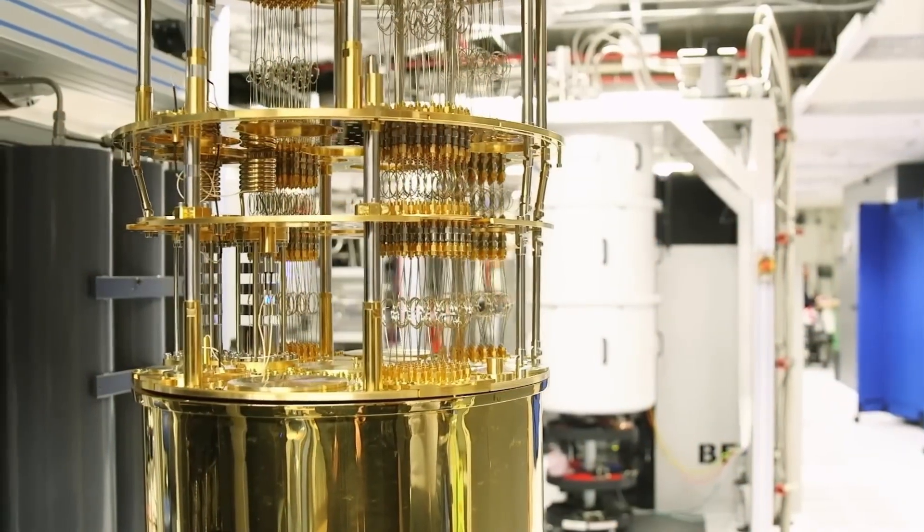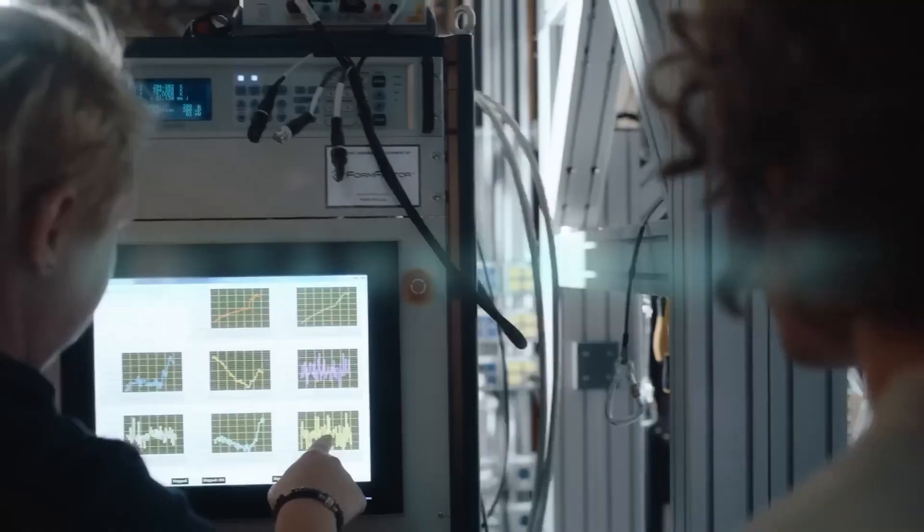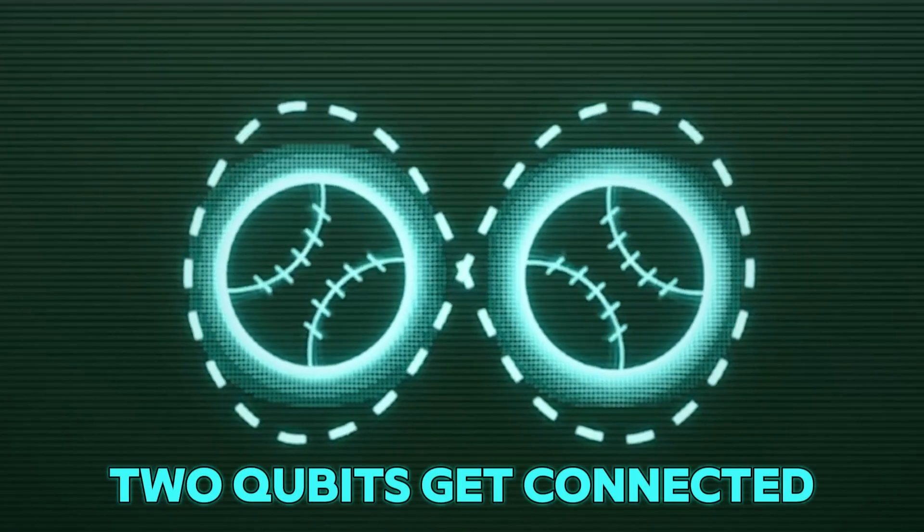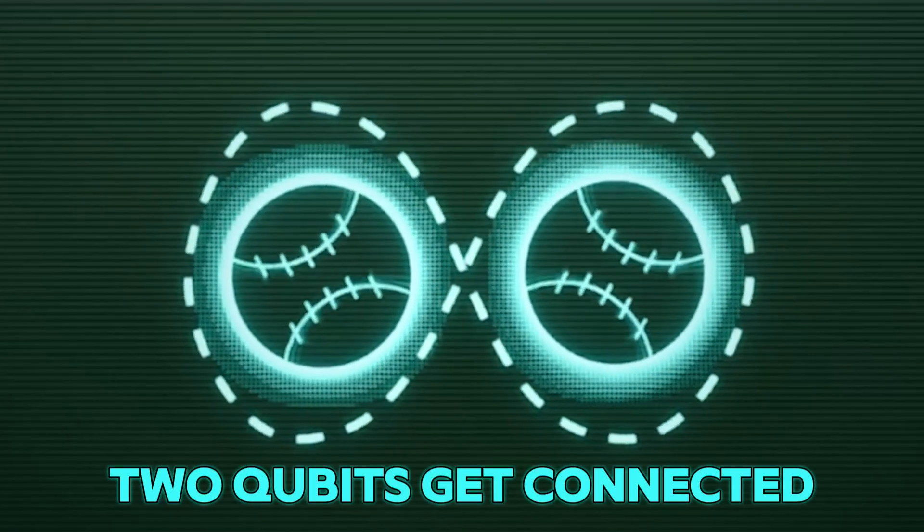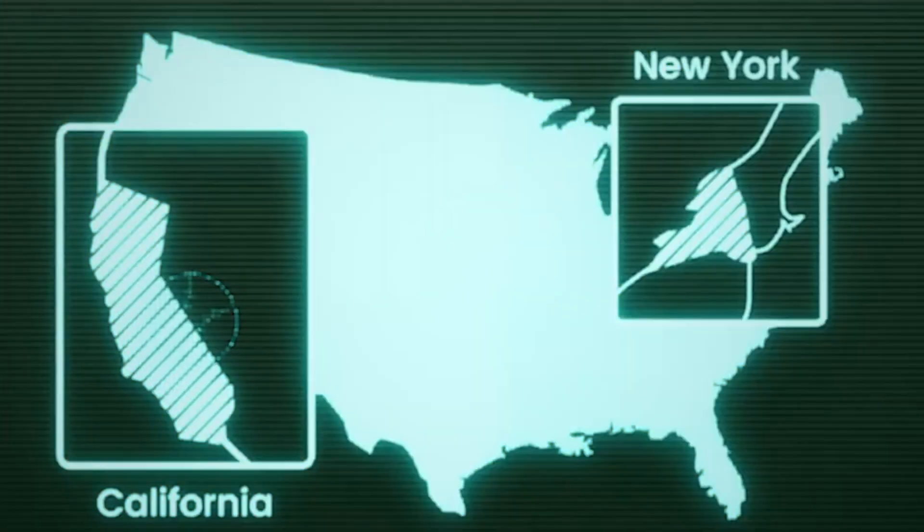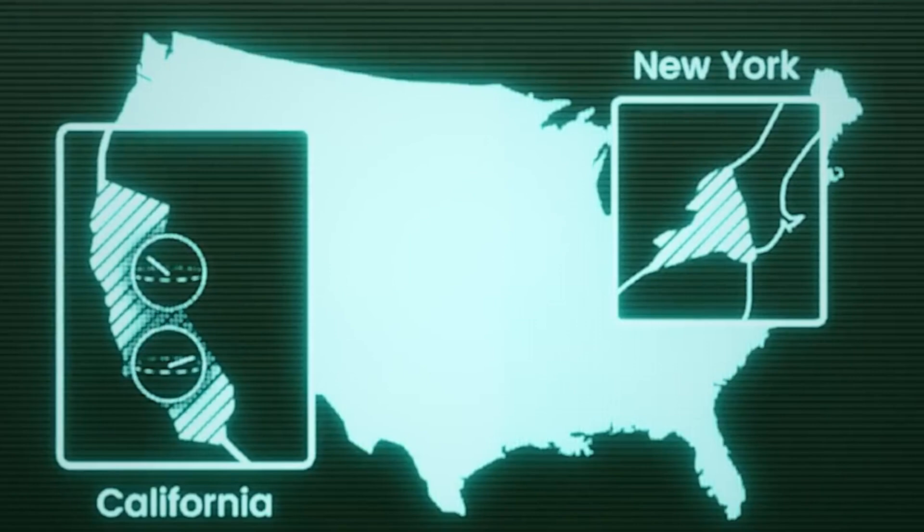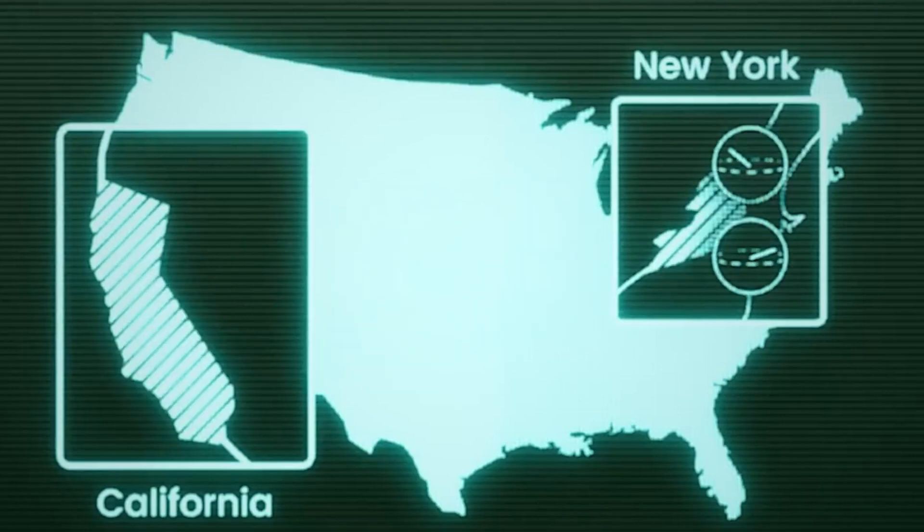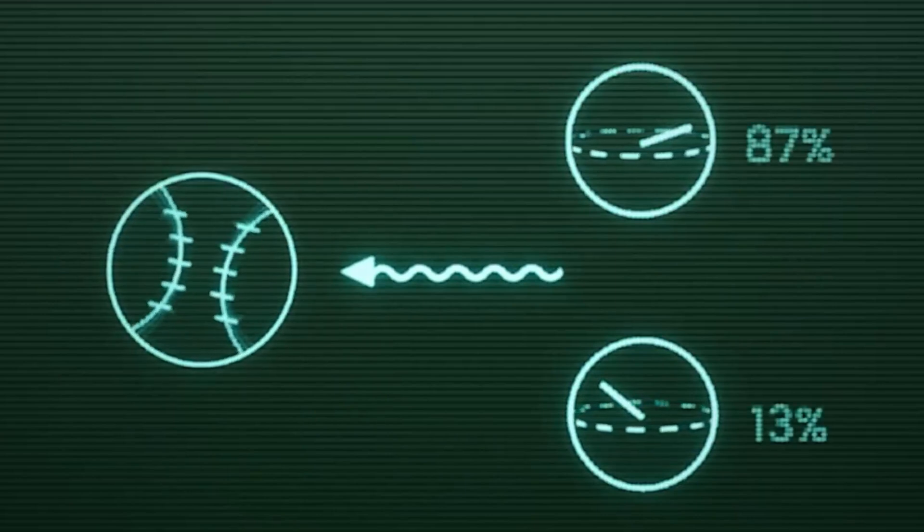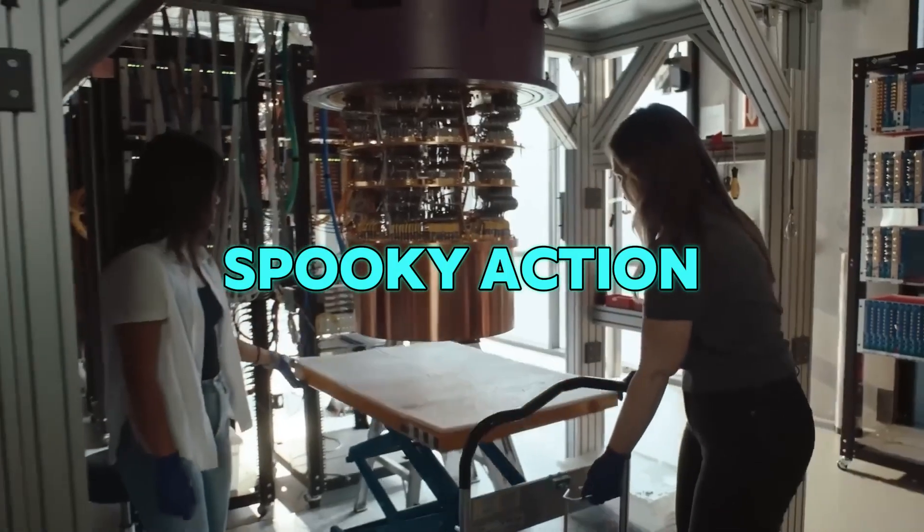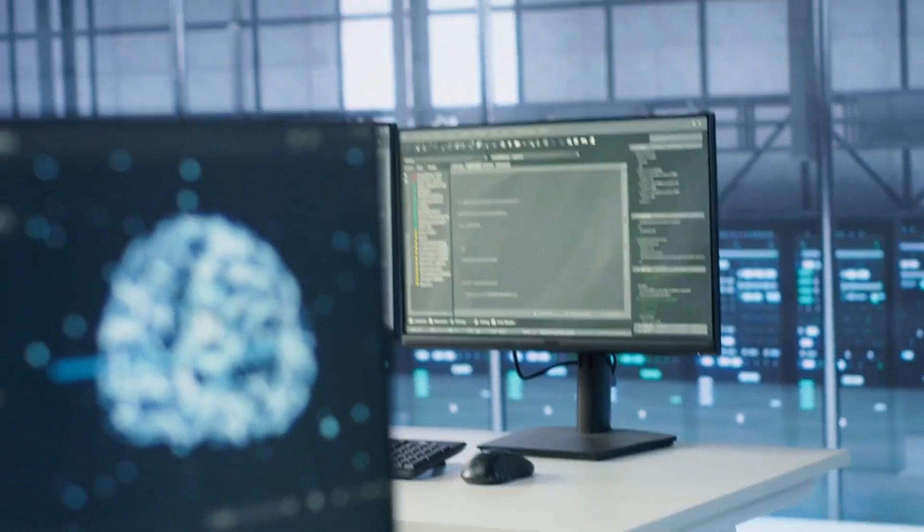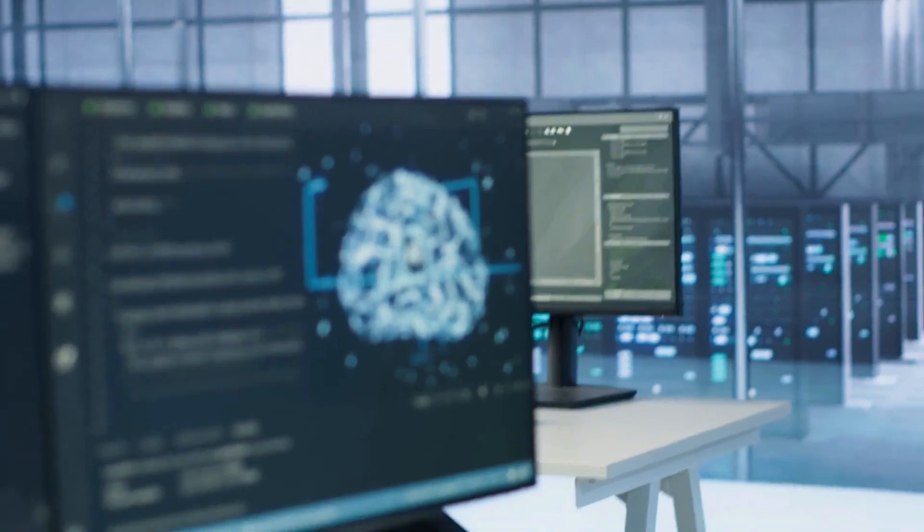But wait, there's more. Qubits can also do something called entanglement. This is where two qubits get connected, like best friends who always know what the other is up to, no matter how far apart they are. Imagine you have two magic dice, one in your hometown and one on the other side of the world. Roll one, and the other shows the same number instantly. Scientists call this spooky action, and it lets quantum computers do calculations that regular computers can only dream of. Pretty wild, right?